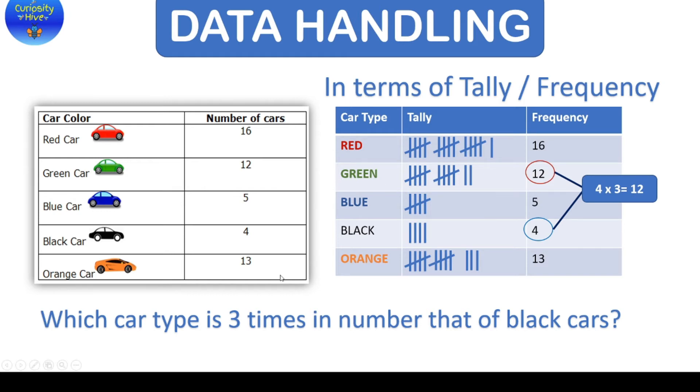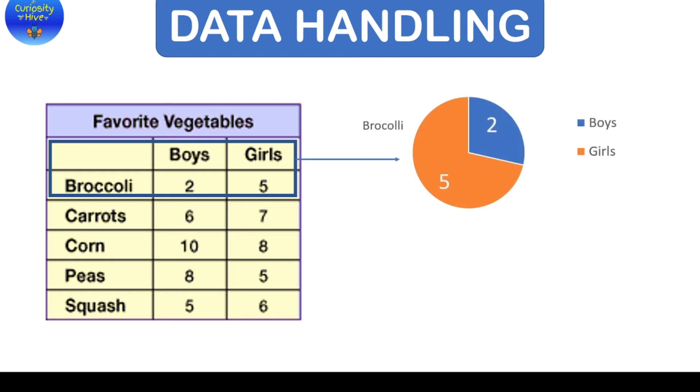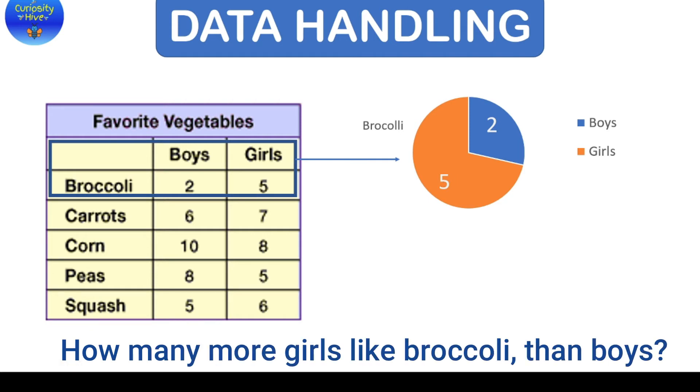Now, let's look at the third data conversion which is pie charts. For example, this table gives us information about the vegetables and the number of boys and girls who like them. Now, let's take this section which is for broccoli and the number of people liking it. And this can be plotted as a pie chart such as this where the key tells us what each section of the pie stands for. So the question here could be how many more girls like broccoli than boys? So the answer would be 5 minus 2.